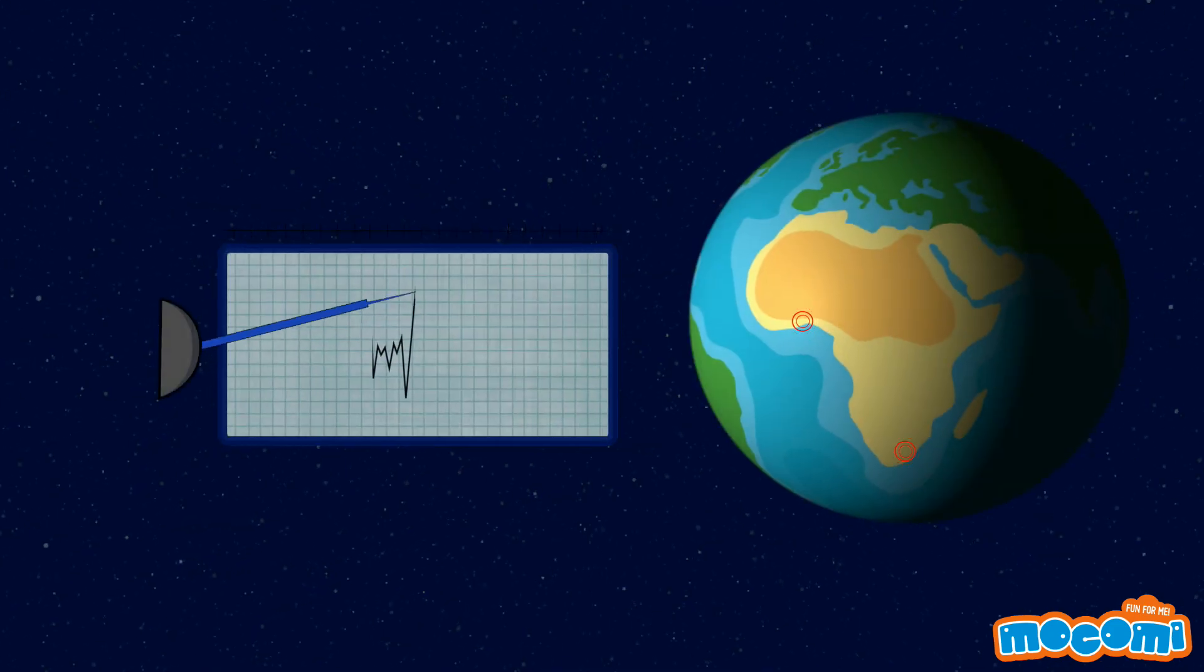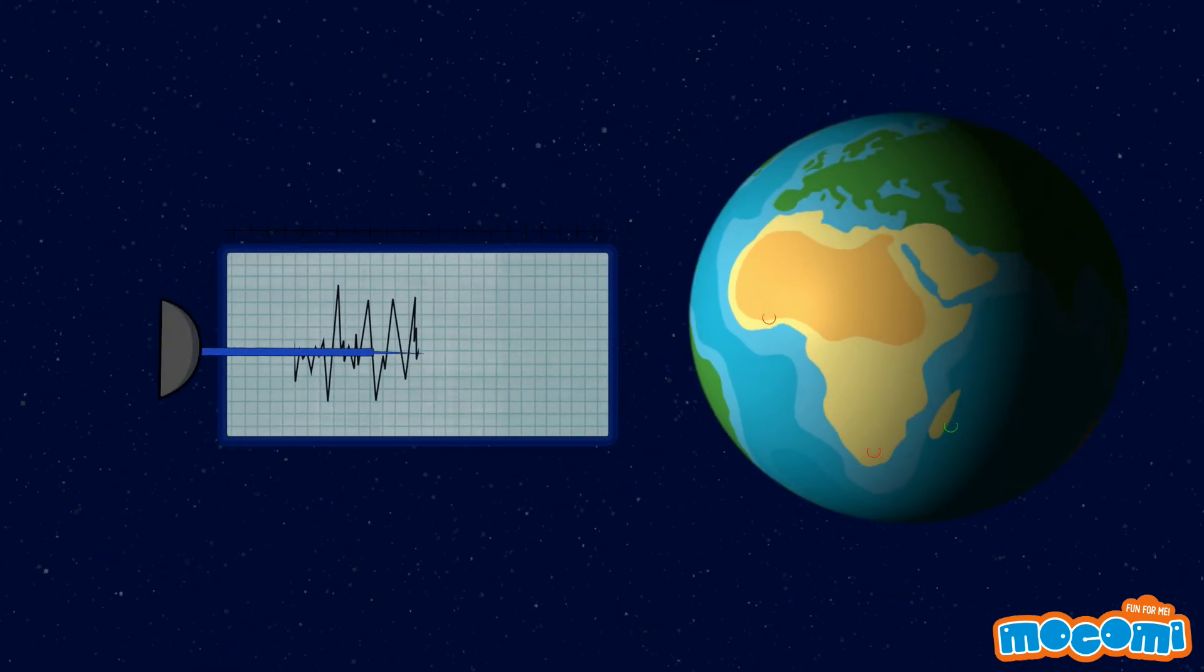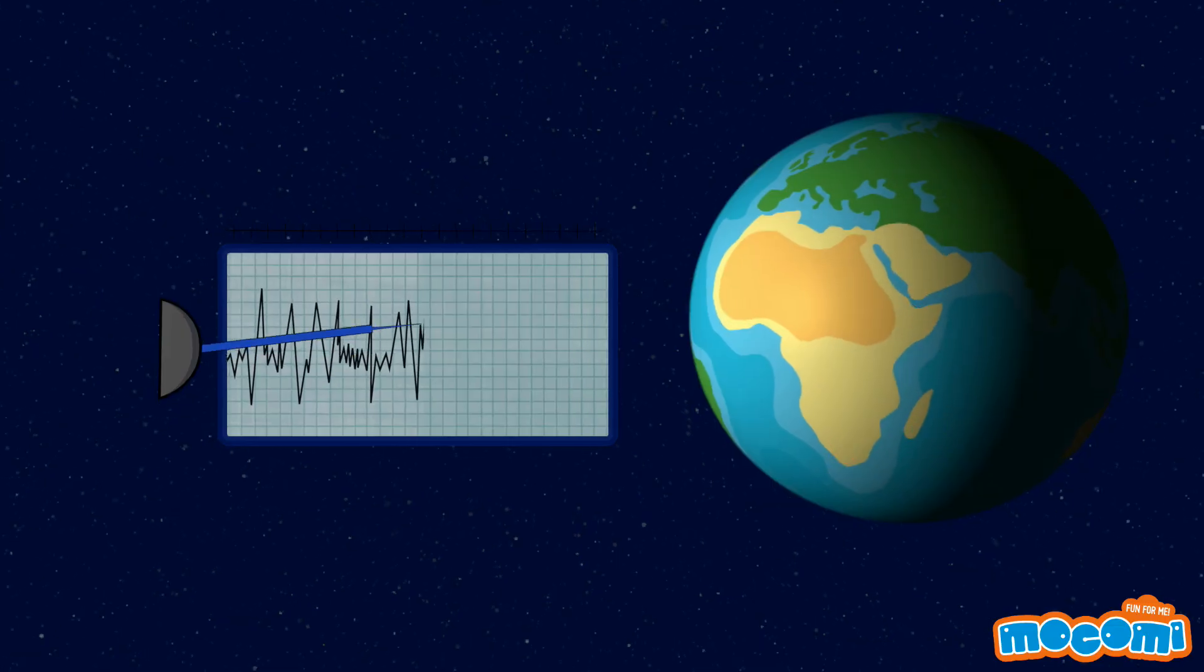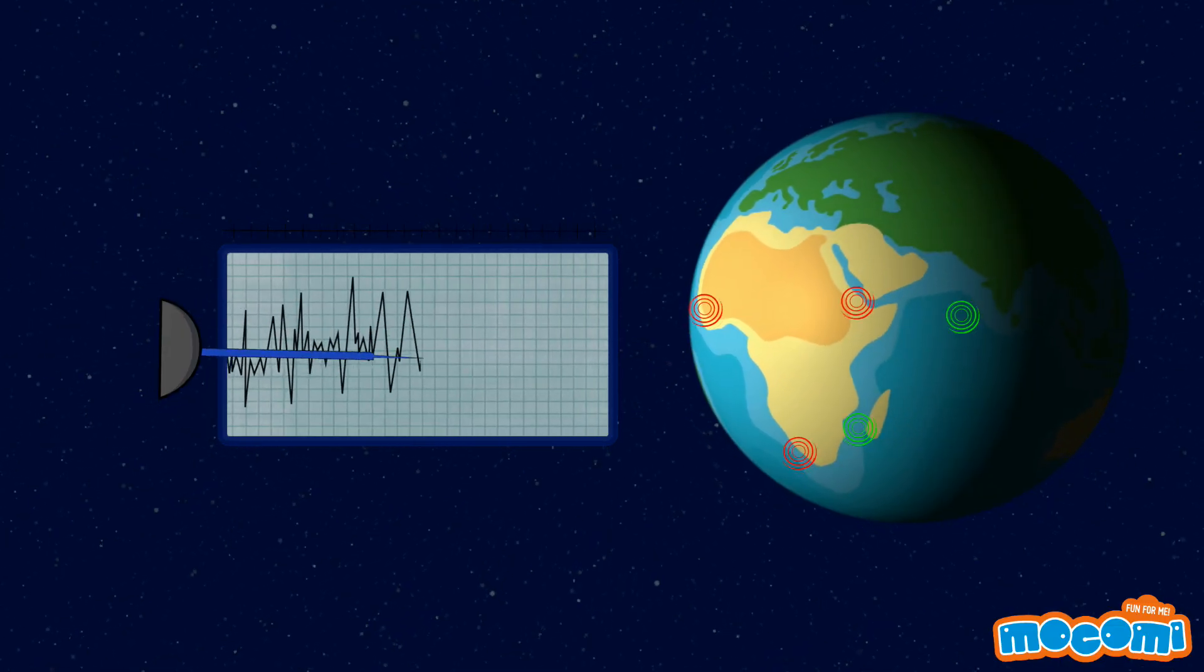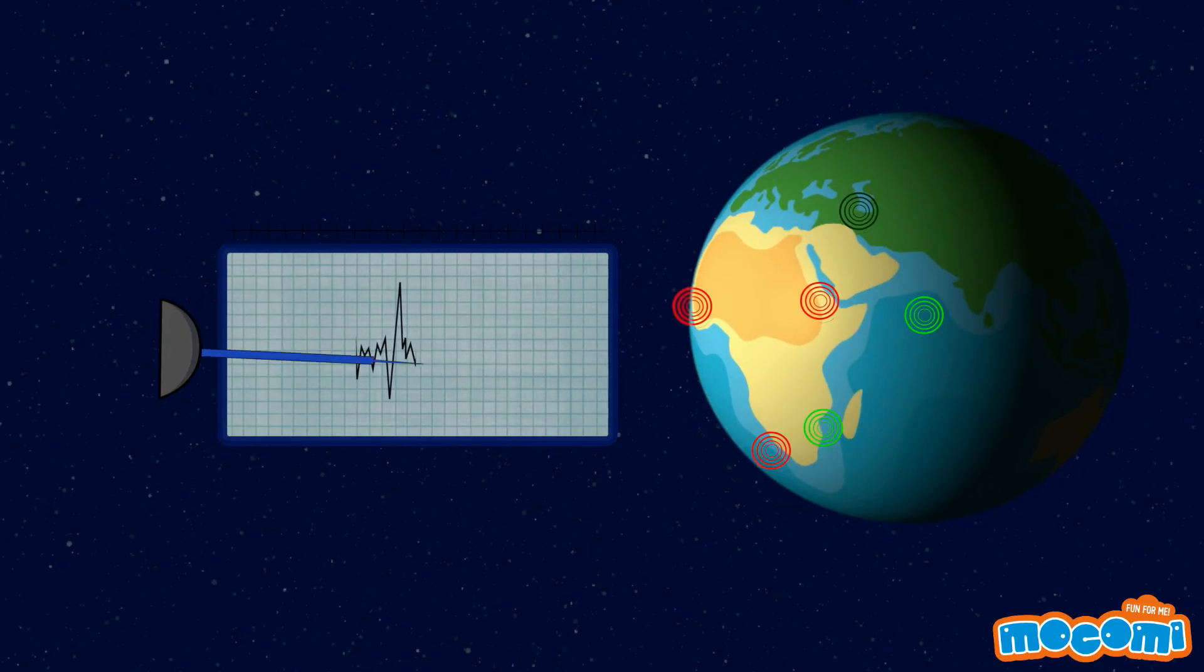Scientists understand the composition of the Earth better by studying seismic waves. Seismic waves are vibrations that spread out from the epicenter of earthquakes.